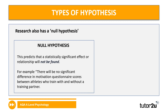Another term related to hypotheses that you need to know is the null hypothesis. Although it isn't explicitly named on the spec, it's very important for your understanding of inferential statistics — you can't go into stats without knowing about hypotheses. A null hypothesis states that nothing will be found. For example: there will be no significant difference in motivation questionnaire scores between athletes who train with and without a training partner. A good way to write a null hypothesis is to write a non-directional hypothesis that states there will be a difference, and then change it to say there will be no difference.